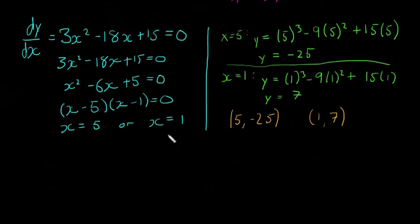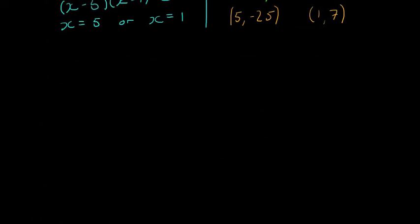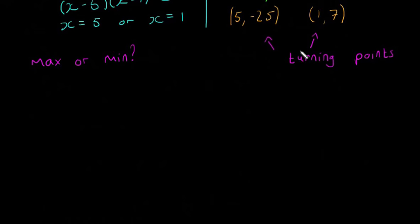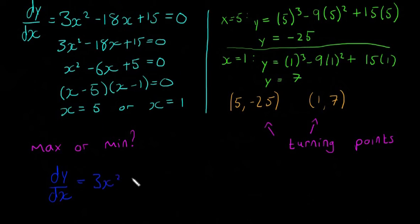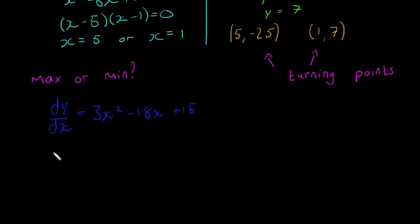Now we need to determine if each turning point is a maximum or a minimum. To do that, we take the second derivative d²y/dx². Since dy/dx equals 3x squared minus 18x plus 15, differentiating again gives d²y/dx² equals 6x minus 18, and the constant 15 goes to zero.